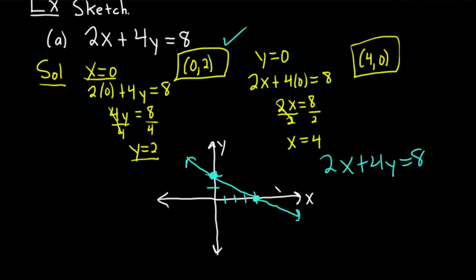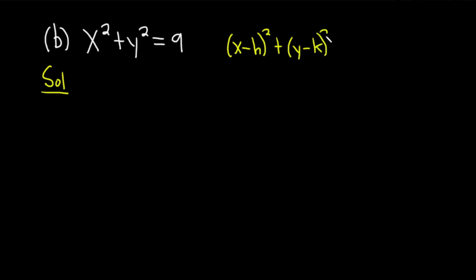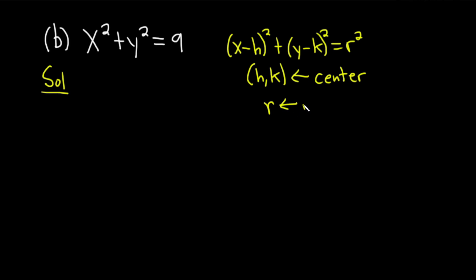Now let's do an example of sketching the graph of a circle. You know it's the equation of a circle because you have x squared and y squared — they're both squared. The standard form, sometimes called the center-radius form, is: (x minus h) squared plus (y minus k) squared equals r squared. Here (h, k) is the center of your circle and r is the radius.